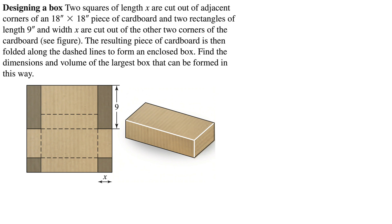Here we have an optimization problem about designing a box. It says two squares of length X are cut out of adjacent corners of an 18 by 18 inch piece of cardboard and two rectangles of length 9 inches and width X are cut out of the other two corners of the cardboard.